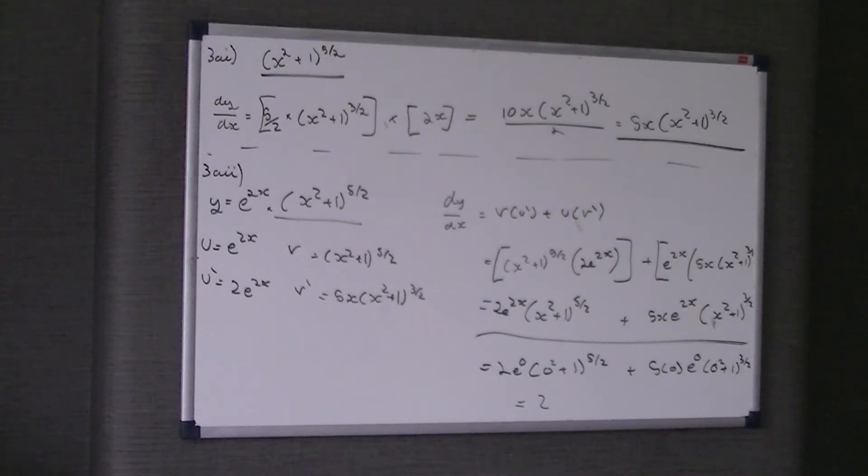So we put x to be 0. That's 2e^0(0² + 1)^(5/2) plus 5(0)e^0(0² + 1)^(3/2). You don't need a calculator to work that out, it's just 2. Anything to the power of 0 is 1, so 2 times 1 times 1 equals 2.